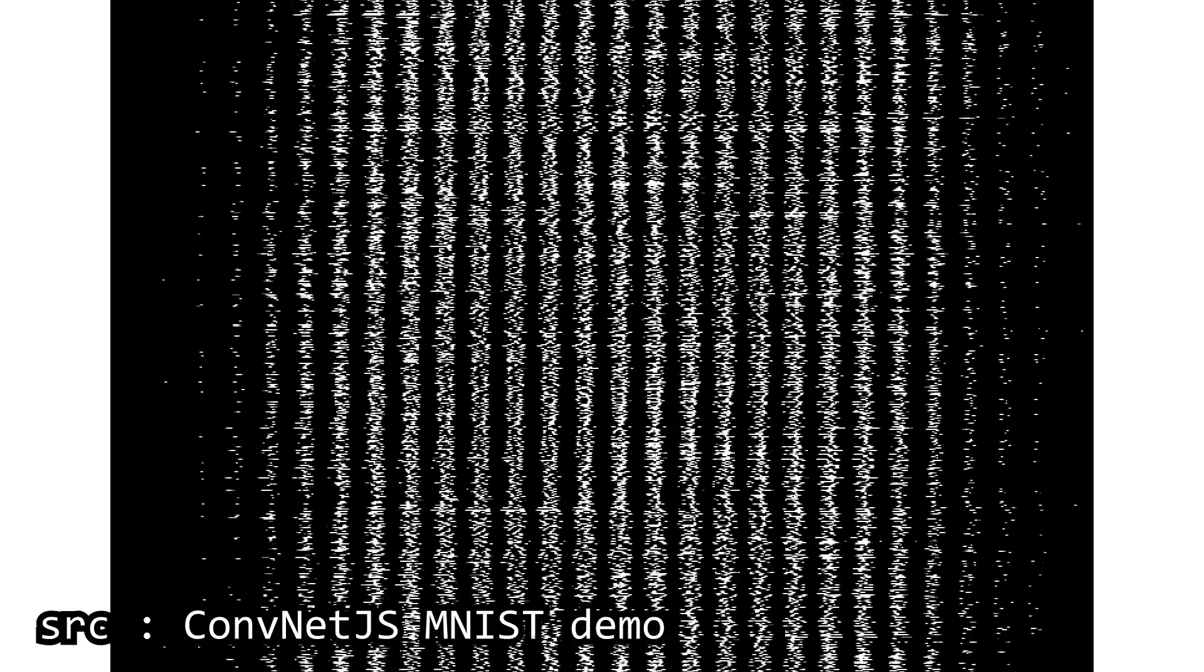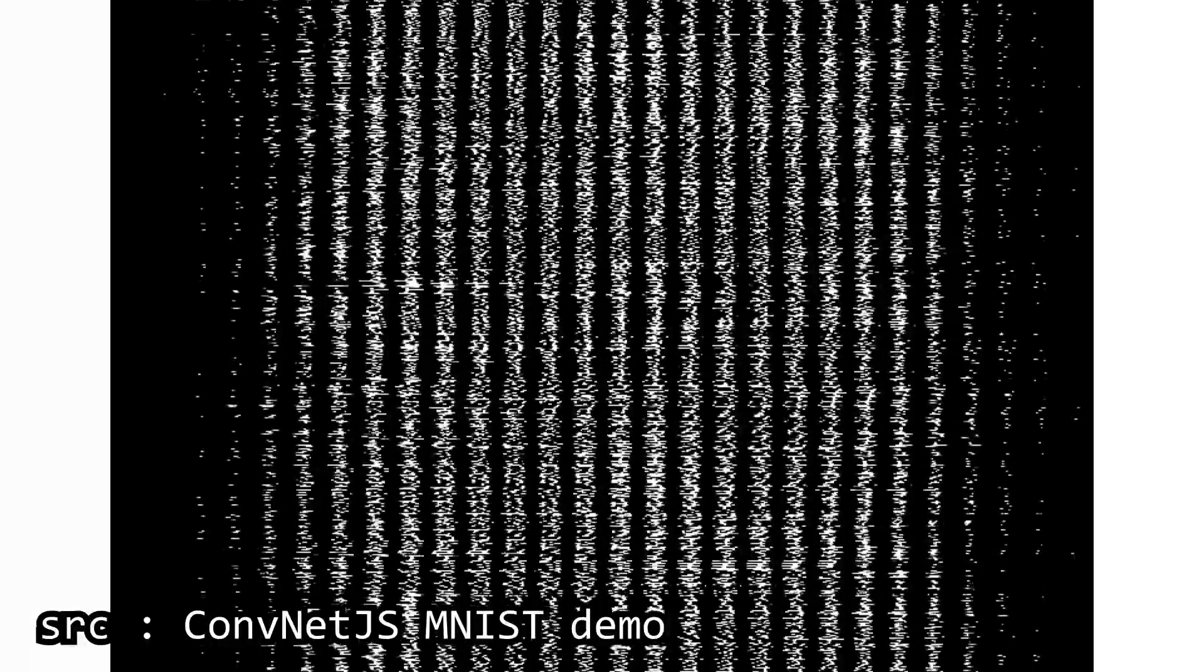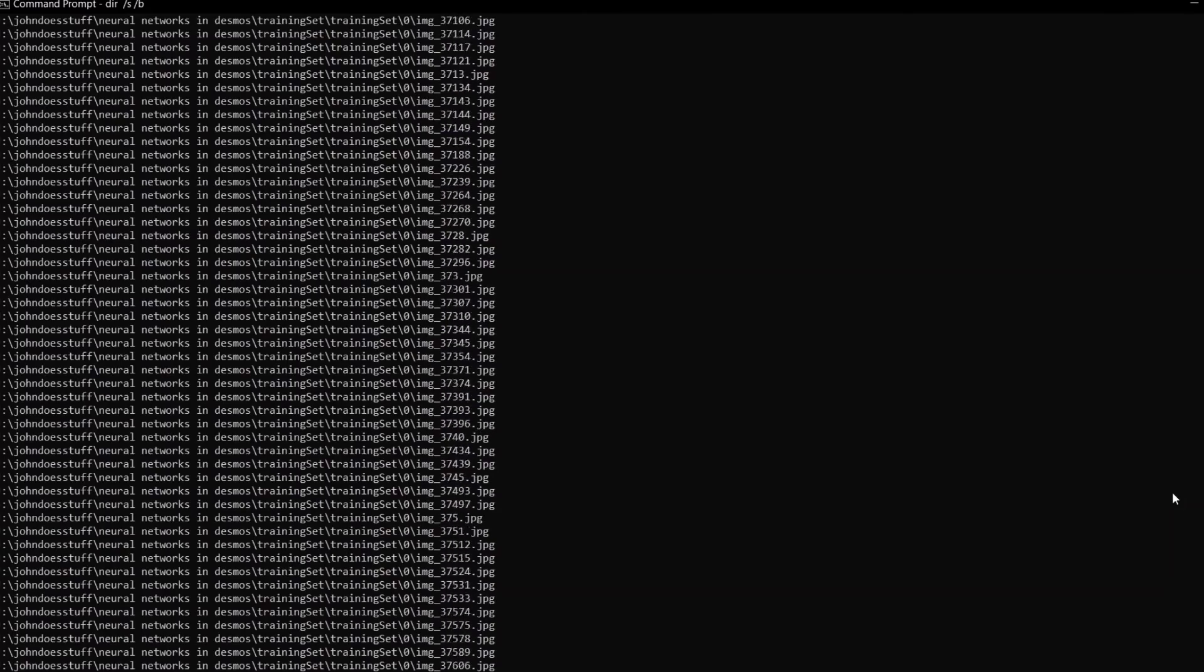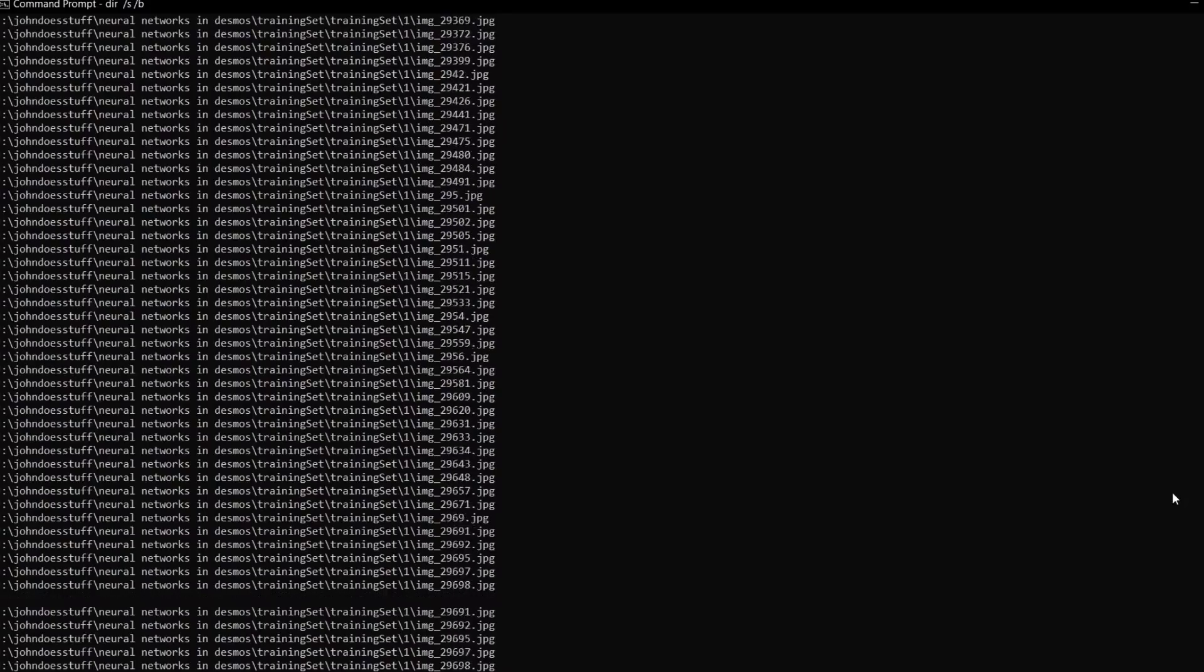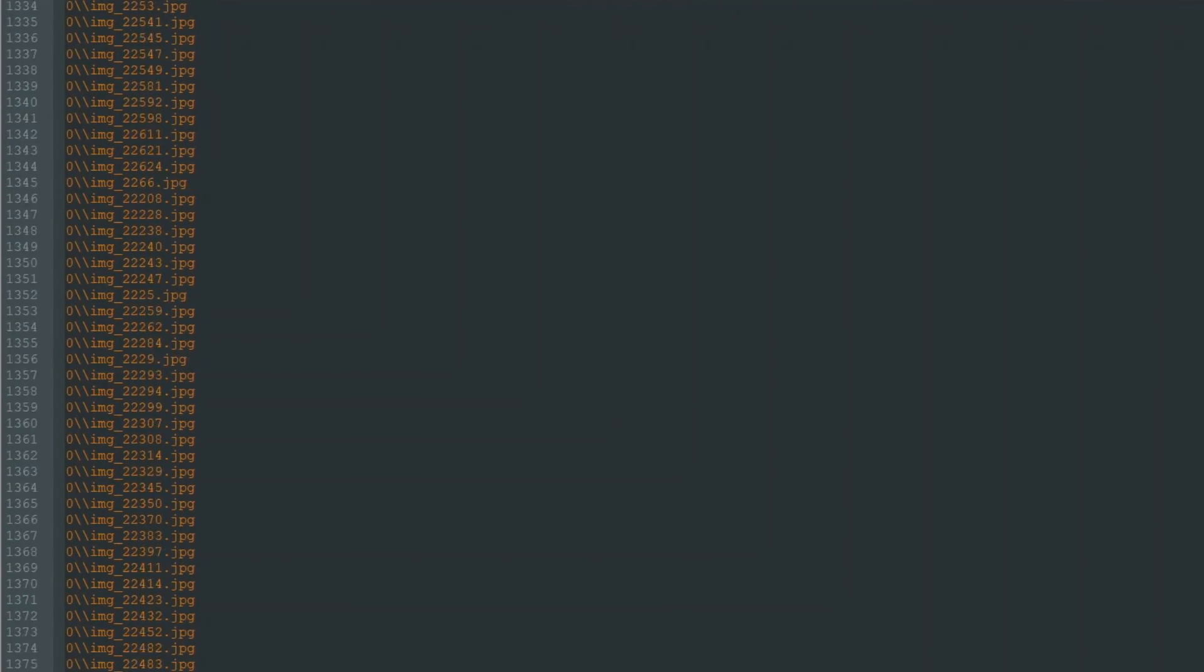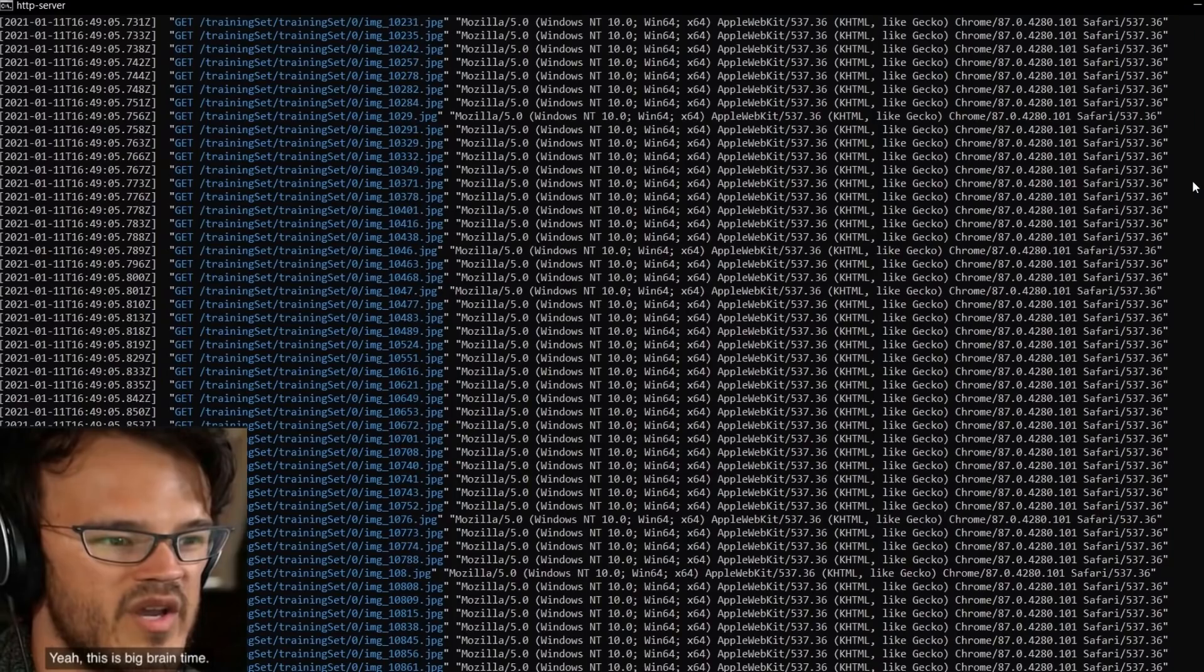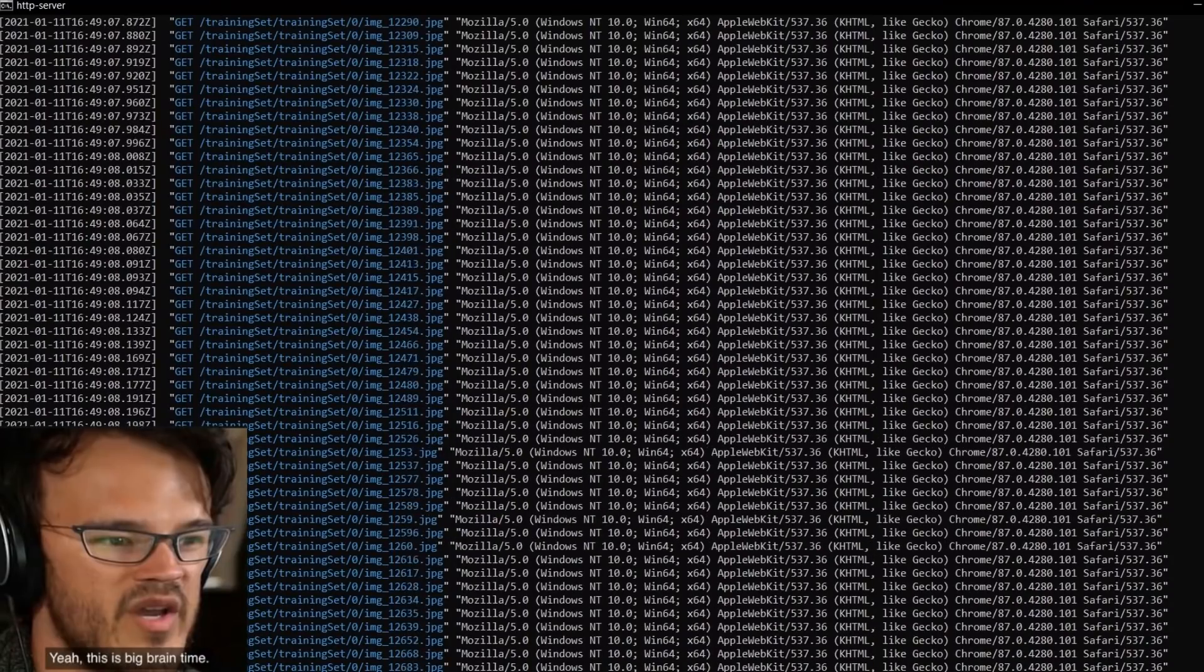You could do this the much more efficient way of packing every image in the dataset into a single image that could be easily loaded and interpreted, but I didn't feel like doing that, so instead we're going to pipe DIRSB into a file, then turn it into a JS file, storing a multi-line string, and use that to load our 42,000 training images individually.